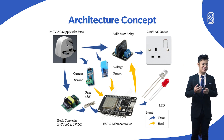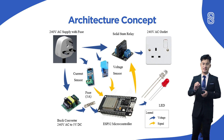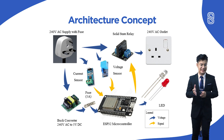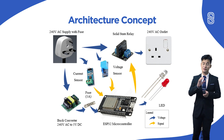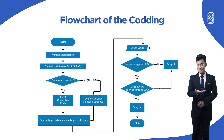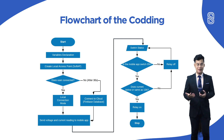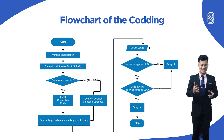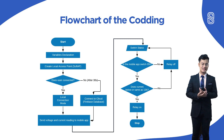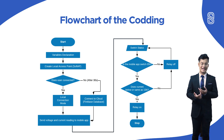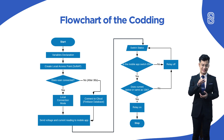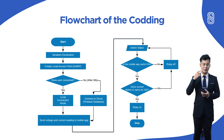This is also an architecture concept shown as a picture illustration. The reason we use a solid-state relay instead of a mechanical relay is reliability — mechanical relays are prone to mechanical failure, but solid-state relays are not. Moving to the flowchart of the coding: it starts with variable declaration, then creates a local access point called softAP. It checks whether the user is connected — if yes, it enters local connection mode; if no, after 30 seconds it connects to the cloud. It then sends voltage and current readings to the mobile app, then checks the switch state under two conditions. If both conditions are true, the relay turns on; if one is false, the relay turns off.